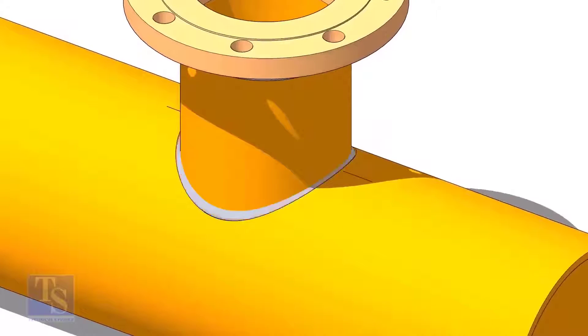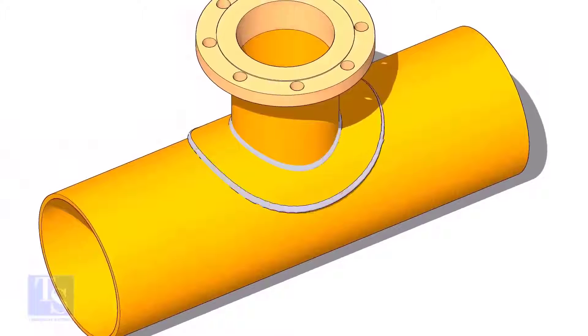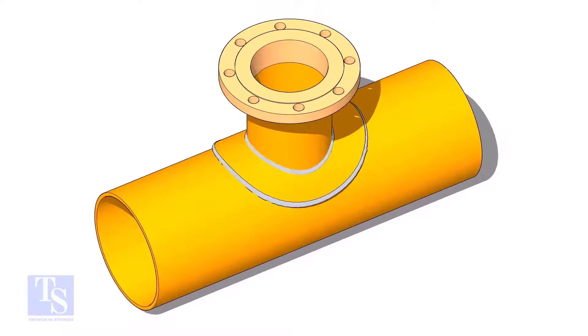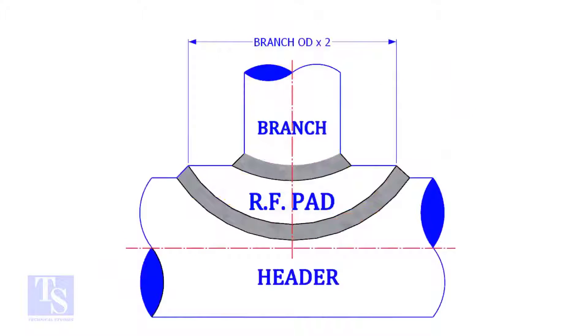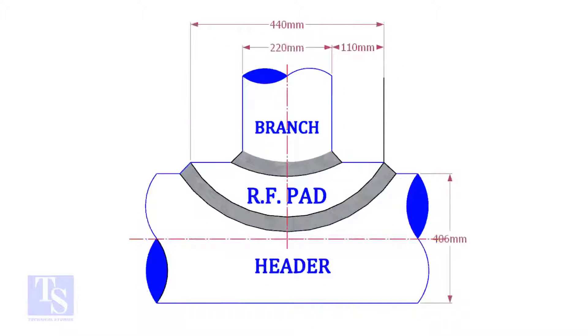A reinforcement pad or RF pad is used to strengthen the fabricated or welded pipe branch connection joints. Usually, the outer diameter of an RF pad is double the OD of the branch pipe. The OD of our branch pipe is 220 mm, so the outer diameter of our RF pad is 440 mm.